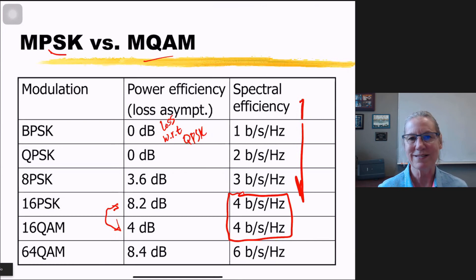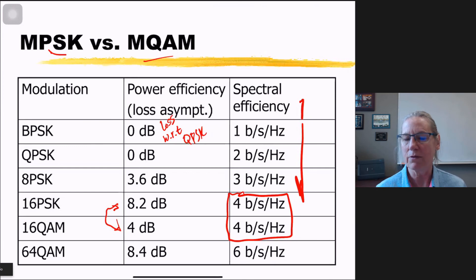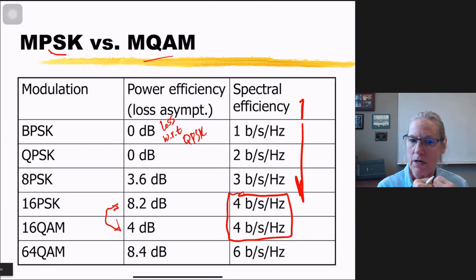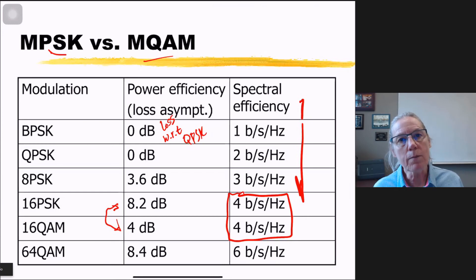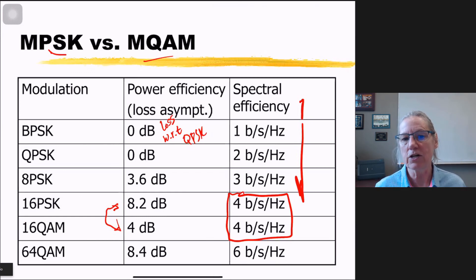Cellular is both power-limited — small battery — and bandwidth-limited — spectrum costs billions. So cellular systems use QAM, which provides both high spectral efficiency and better power efficiency than PSK at the same constellation size.